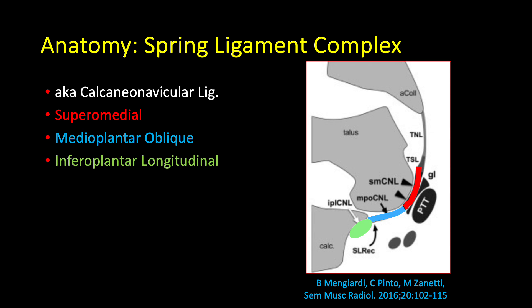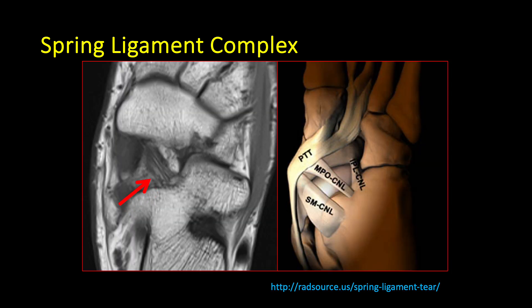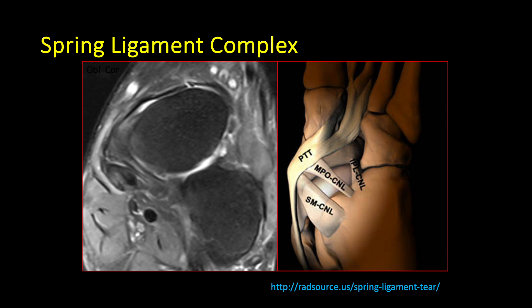The spring ligament is otherwise known as the calcaneonavicular ligament. There are three components. In red, I've highlighted the supramedial, and in blue, the medial plantar oblique, also referred to as the inferomedial component, and in green, the inferioplantar longitudinal component. In the coronal plane, this forms a contiguous sling under the talar head. At the plantar aspect of the hind and midfoot, we see the inferomedial spring ligament and the inferior plantar longitudinal component of the spring ligament. In the coronal plane, we see this forms a sling under the talar head and is interposed between the talar head and posterior tibialis.